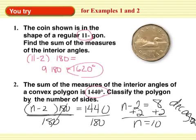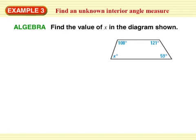Okay, for number 1, the sum of the interior angles is 1,620. And for number 2, I classify the polygon as a decagon, because n equals 10.